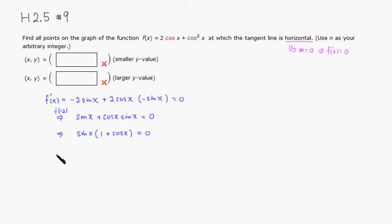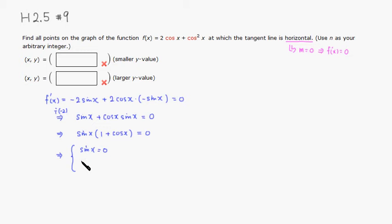From the factored form we get two equations: either sin(x) = 0, or 1 + cos(x) = 0.